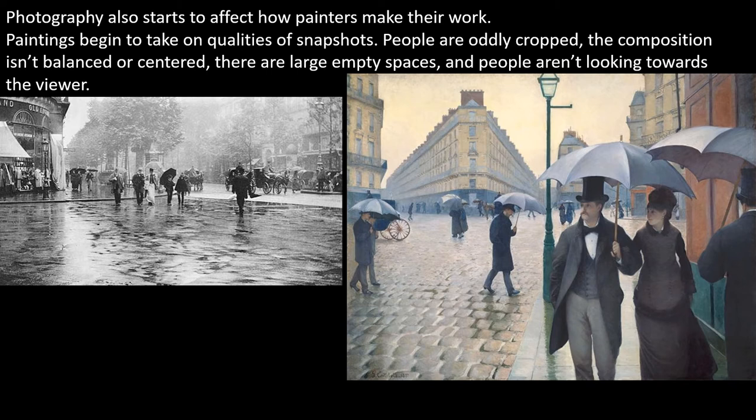On a much lighter note, photography has other effects besides social change and social justice. Photography also begins to affect how painters work. Imagine going out into the street and taking a photograph that's bad — you accidentally chop off somebody's arm, cut somebody in half, things are off center. We've all taken very quick snapshots, very uncomposed pictures. That's possible with a camera. Well, painters look at those snapshots and think, 'that's really cool — maybe our paintings should take on the quality of snapshots.' And they start to do that. Painters start copying a snapshot aesthetic, looking at photographs and making their paintings look like snapshots.